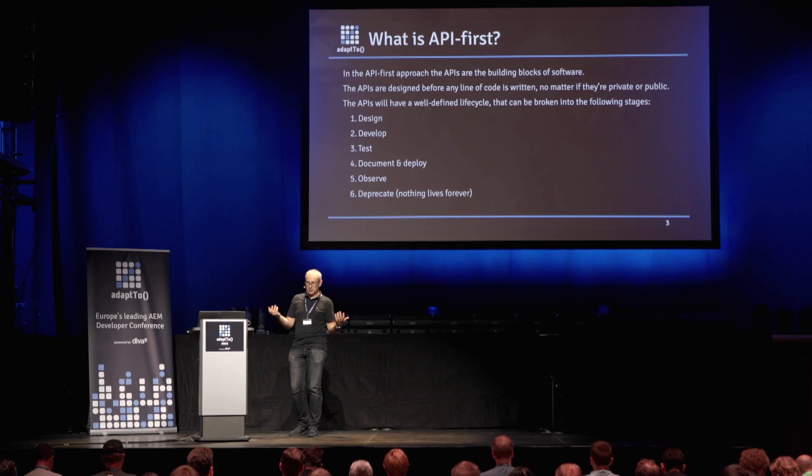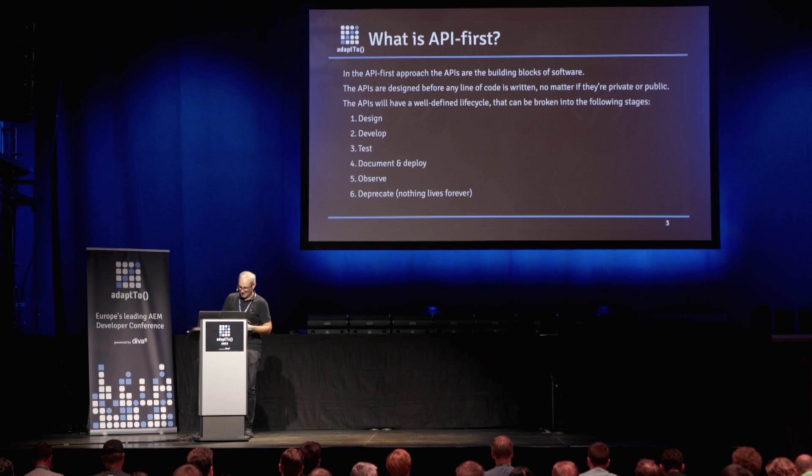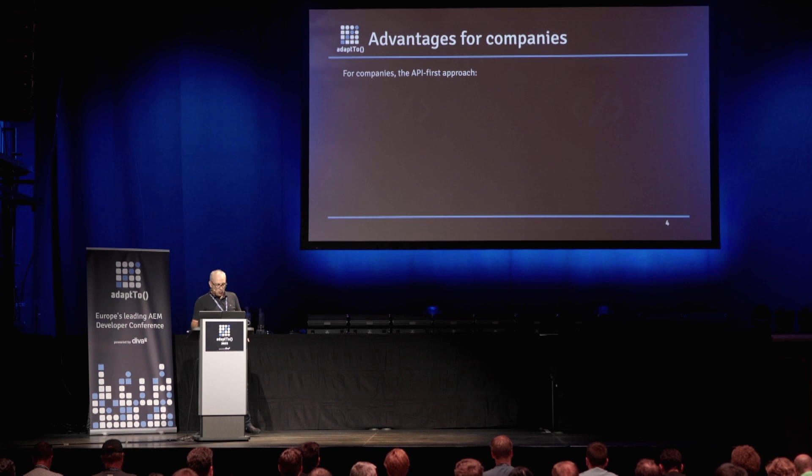Nothing is perfect and nothing lives forever. You might need to deprecate an API, either because it's going to have new use cases that can't be fulfilled with the existing contract, because a security issue came up, or because a service goes down for whatever reason — no more funding to keep it up after a certain number of months or years.